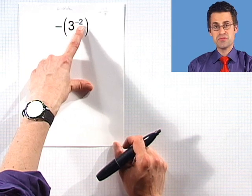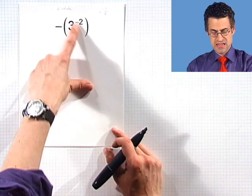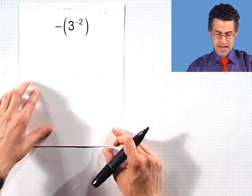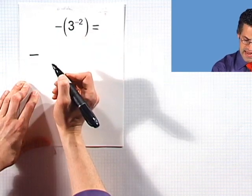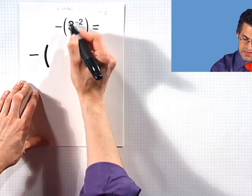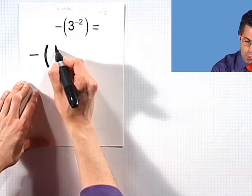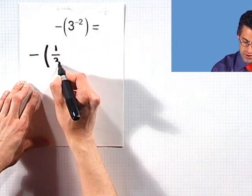What does the negative 2 power mean? It means that I actually take the reciprocal of this base. And so that equals negative, and then this thing becomes one-third squared.